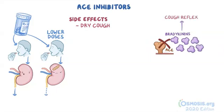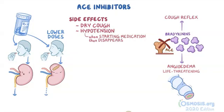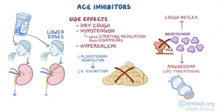Another more rare consequence of bradykinin accumulation is angioedema, a painful swelling in the airways that's life-threatening. Other side effects include hypotension, but it only happens when the person starts taking the medication, then eventually disappears. People using ACE inhibitors should avoid a high-potassium diet because there's decreased aldosterone production, which means there is less potassium excretion in the urine and this could lead to hyperkalemia.